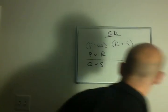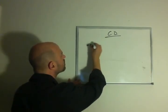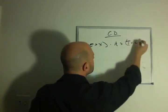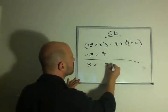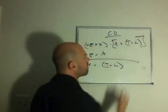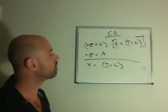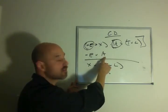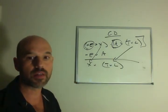So here's another example of the constructive dilemma. We have two if-then statements. Not E implies X, and A implies T or L. We're then told that one of these two ifs is the case, at least. Well, that means that one of these two thens has to be the case. Let's try using it in a proof.